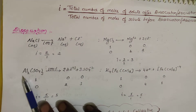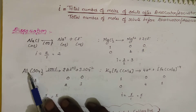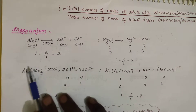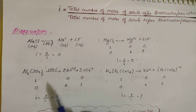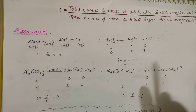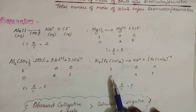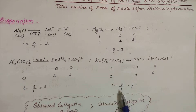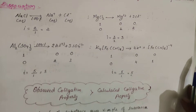For Al₂(SO₄)₃: initially 1 mole gives 2 Al³⁺ and 3 SO₄²⁻ ions after complete dissociation. Total moles after = 5, so i = 5. For K₄[Fe(CN)₆]: gives 4 K⁺ and 1 Fe(CN)₆⁴⁻ ion, total = 5 moles, so i = 5 again.